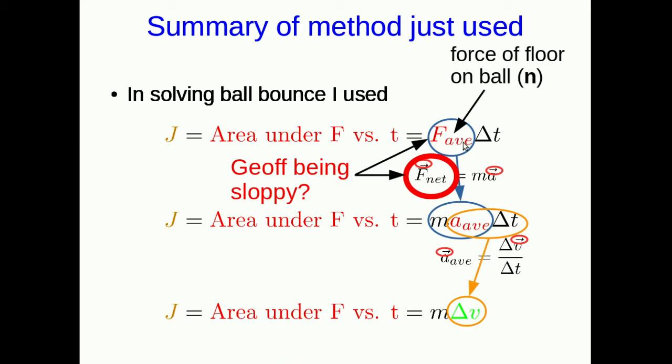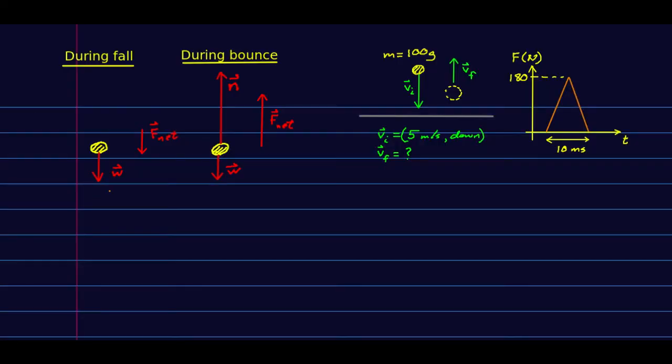Let's look at what was going on if we think about the weight as well. During the fall, the only force acting on the ball was its weight. We know that this leads to an acceleration that is just g down. We get F_net is just w equals ma, so ma equals mg, a equals g.